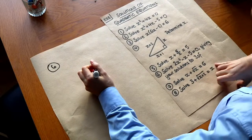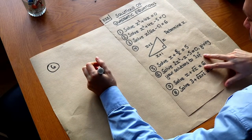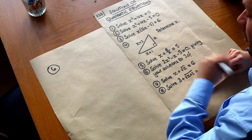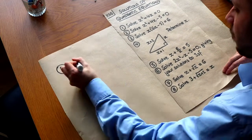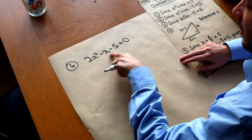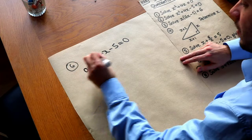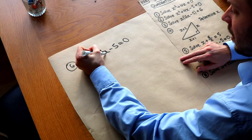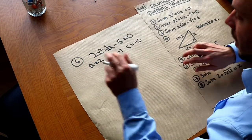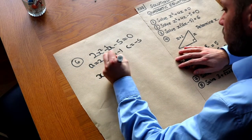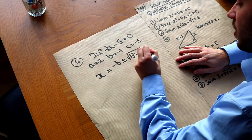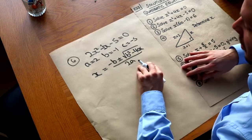Question 6: solve 2x squared minus x minus 5 equals 0, giving solutions to three significant figures. The clue is three significant figures — that tells us the solutions won't be nice, so we can't factorise and must use the quadratic formula. We identify a equals 2, b equals minus 1, and c equals minus 5. The quadratic formula is: x equals minus b plus or minus the square root of b squared minus 4ac, all over 2a.